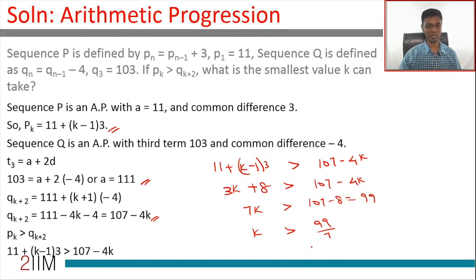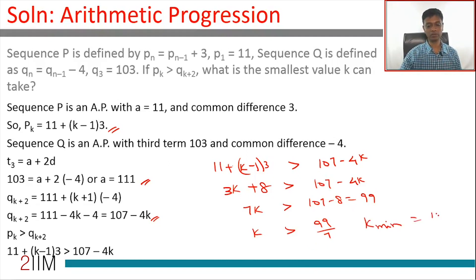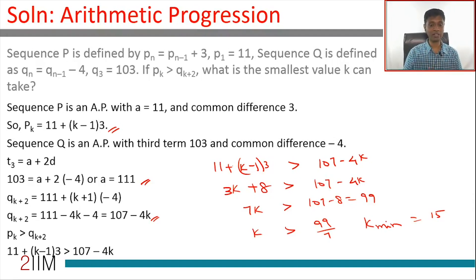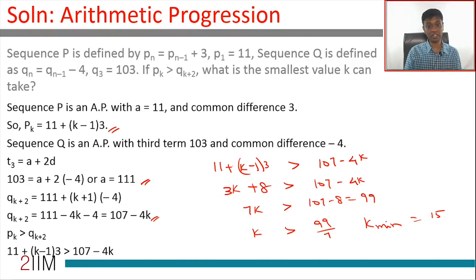Since k must be an integer, the smallest value k can take is 15. Since 99 divided by 7 is 14 point something, k cannot be 14, so 15 and above will work. For the first sequence, terms 16, 17, 18 are larger; for the second sequence, the (k+2)th terms at positions 17, 18, 19 are smaller. So the smallest value of k is 15.